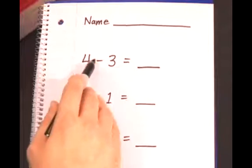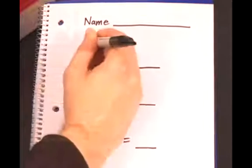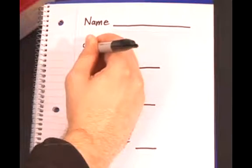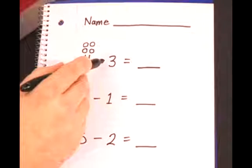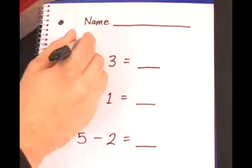This is what you get when you do this. For four I have them draw four circles. Now instead of drawing circles over the three, because it's take away, we're going to show how many of these circles we get rid of.